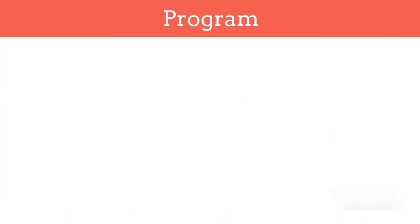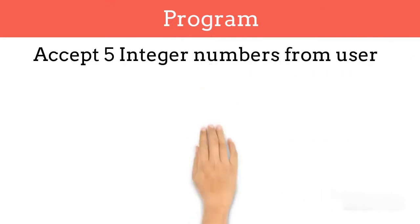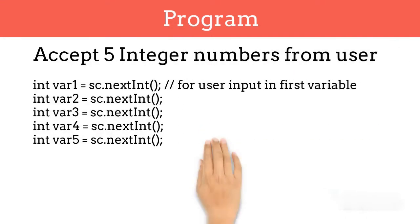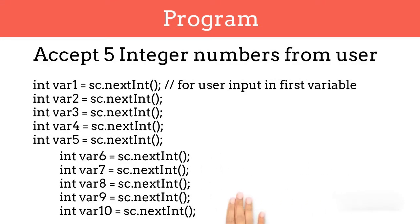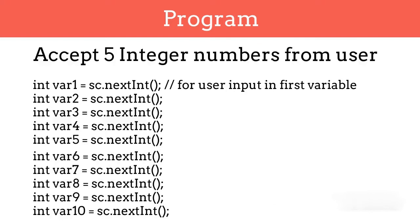Consider a program where we want to take 5 integer numbers as input from the user. For saving these numbers, we need to create 5 integer variables. In the future, if we want to take 10 numbers as input, we will create 10 integer variables. So as the number increases, our lines of code will also increase.